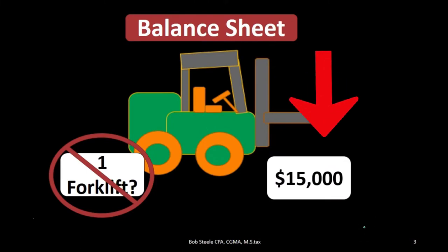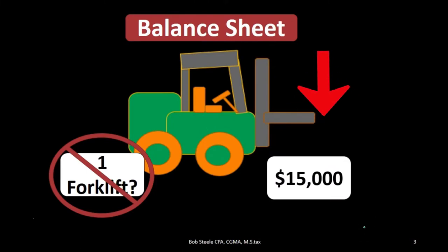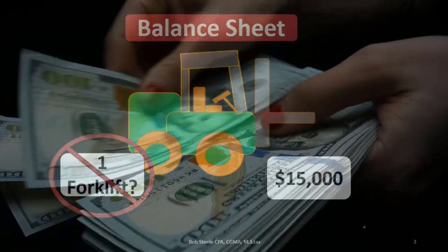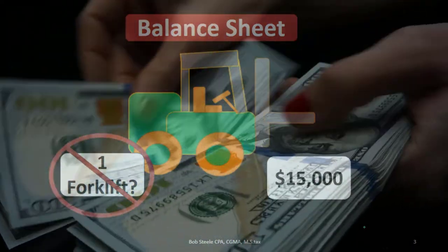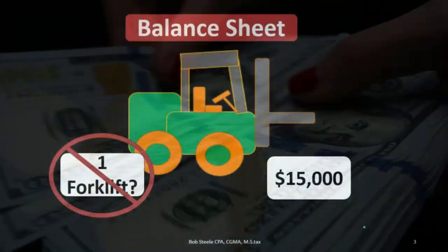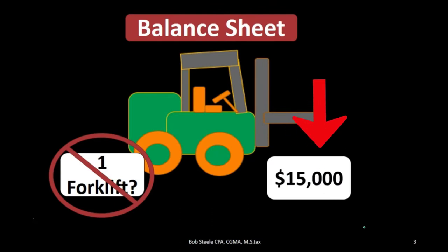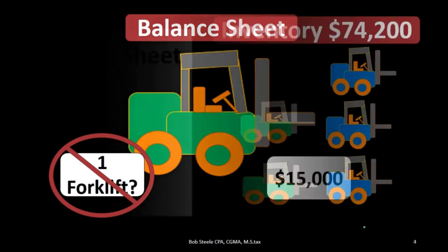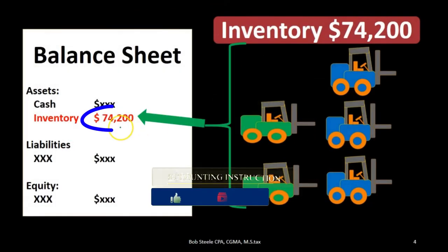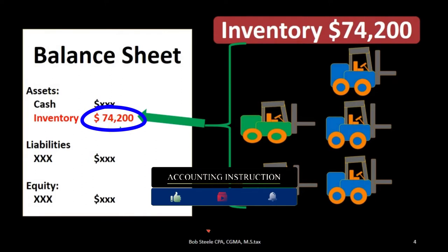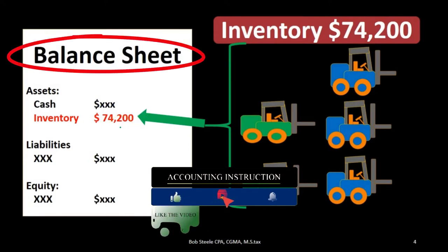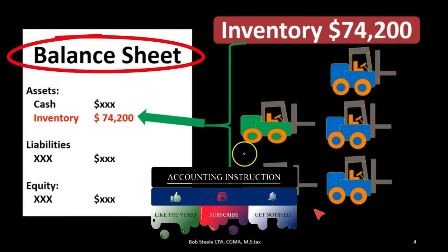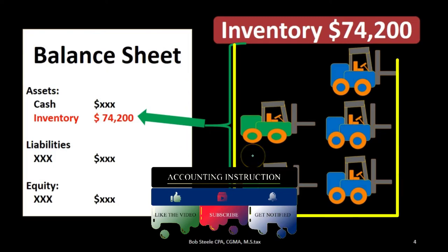The reason we know it's $15,000 is because we purchased it for $15,000 on a free market — whether with cash or some combination of cash and credit. That purchase price on a free market gives us that $15,000 amount. So we have $74,200 of inventory reported on the balance sheet, backed up by these five forklifts.